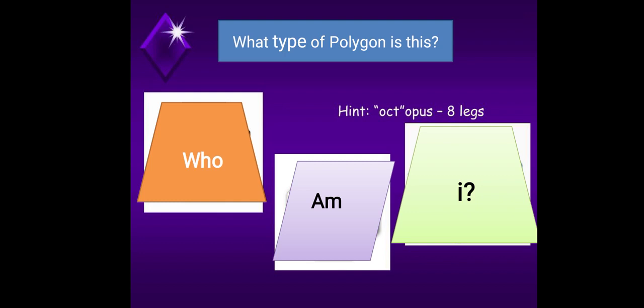What type of polygon is this? This one is a trapezoid. Yes, it is a trapezoid. But having four sides, it is called a quadrilateral.